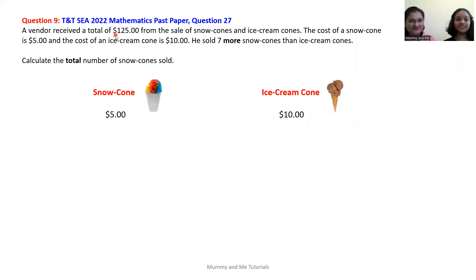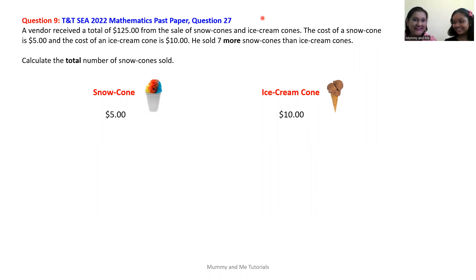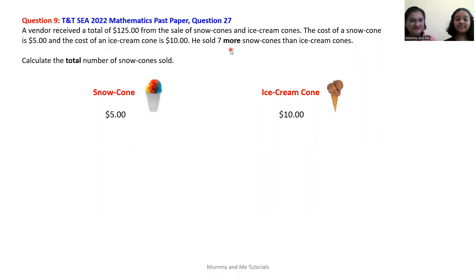A vendor received a total of $125 from the sale of snow cones and ice cream cones. The cost of a snow cone is $5 and the cost of an ice cream cone is $10. He sold seven more snow cones than ice cream cones.